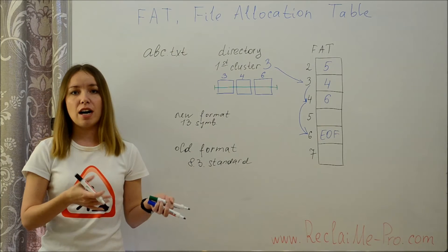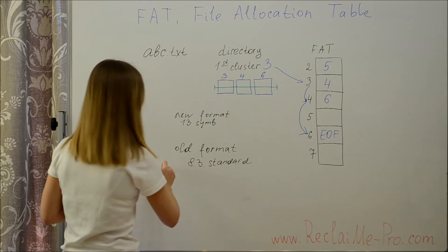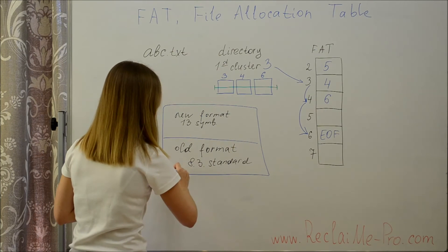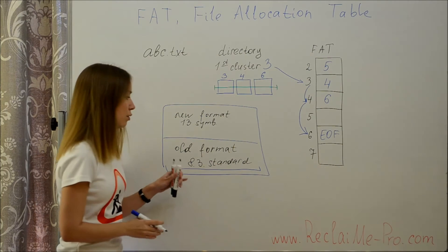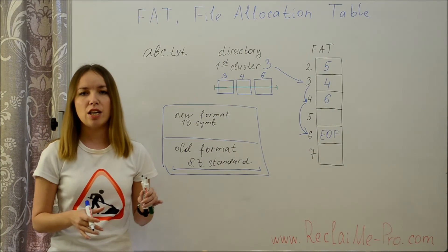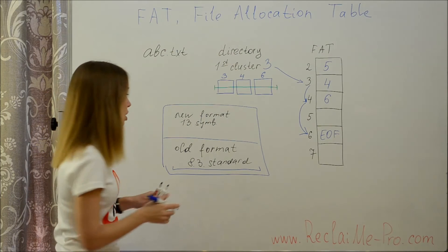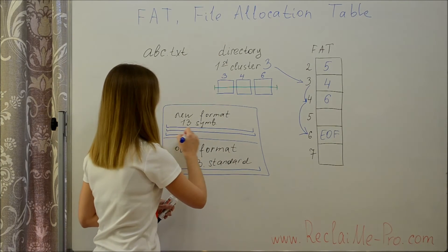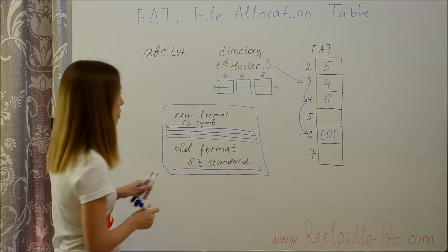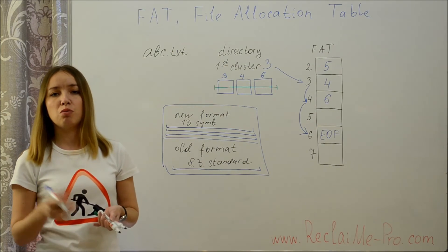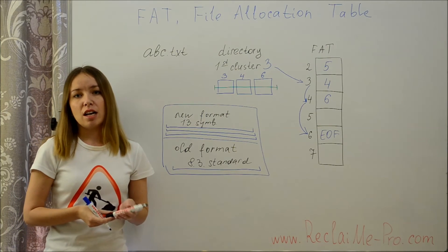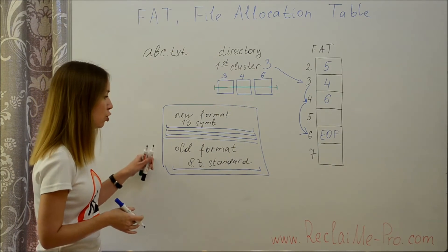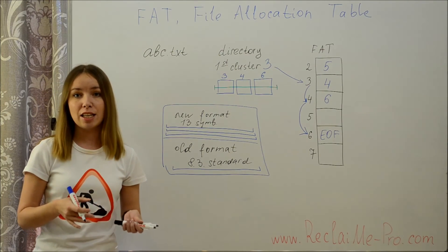Thus a file in a directory is described by one element of old format holding information about file content location, file size and short file name, and elements of new format, the number of which is determined by the long file name. By the way, the element is 32 bytes in size. Thus a directory entry stores 2 file names, long file name and short file name for each file, and these names can be different.